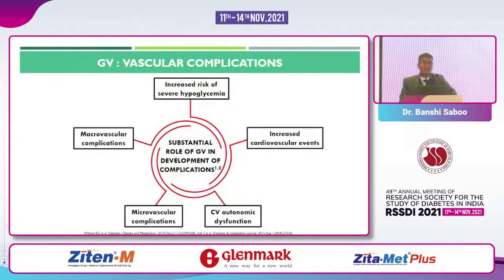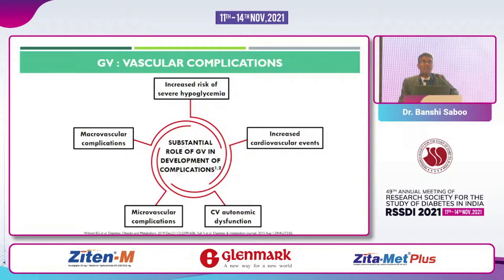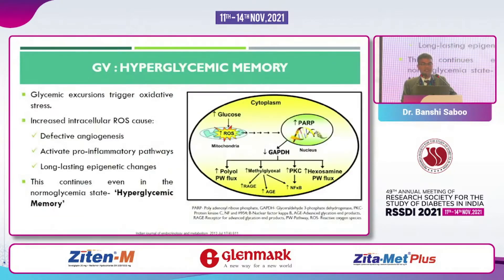Regarding vascular complications and glycemic variability, there is not a very large dataset but there are publications showing a substantial role of glycemic variability in the development of complications. A 2019 publication showed that more glycemic variability leads to increasing cardiovascular events, more CV autonomic dysfunction, more microvascular and macrovascular complications, and increased risk of hypoglycemia.